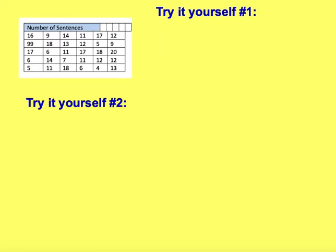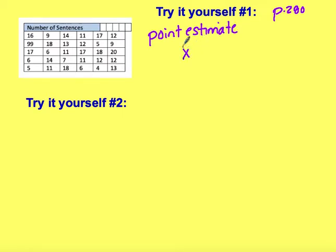We're going to walk through the Try It Yourselves on this video. For Try It Yourself 1 on page 280, it uses the data in the box at the left. I put it up here if you need to pause the video so that you have it in front of you. What it asks for in Try It Yourself 1 is to find the point estimate for the population mean. The point estimate is simply the sample mean, so we're going to find our mean.